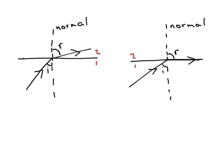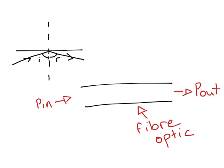This is exactly what happens inside the fibre optic. So if we input a signal from one end of the fibre, it will be reflected across the boundaries of the fibre optic and reach the other side.